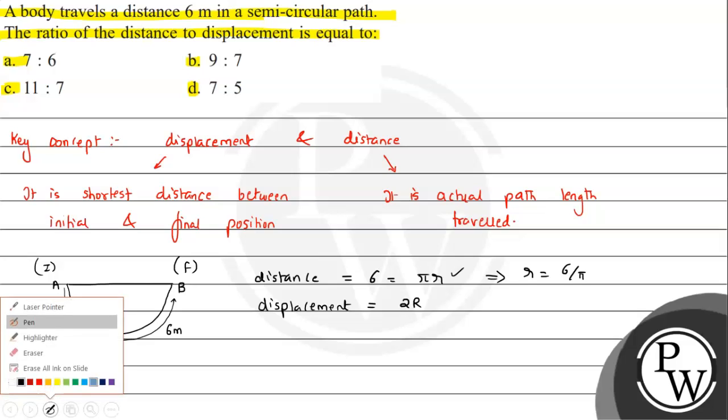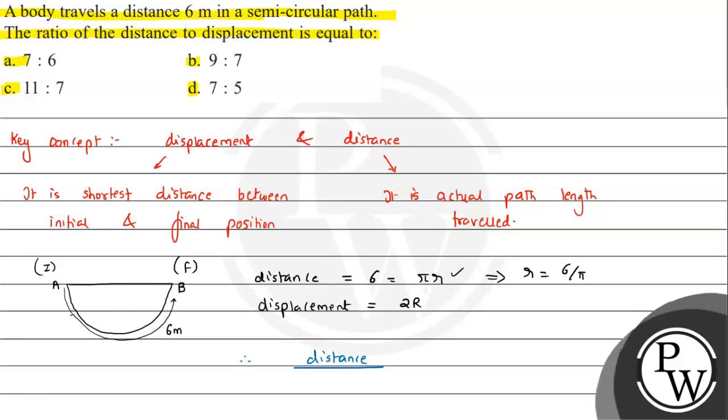So we can say, therefore, we can take the ratio of distance upon displacement. Distance is πr divided by displacement which is 2 into r.